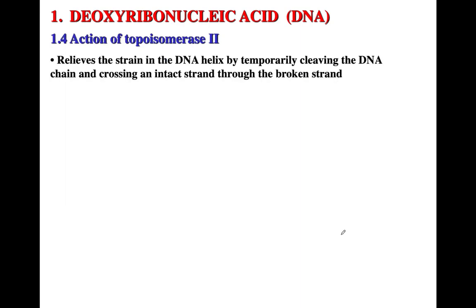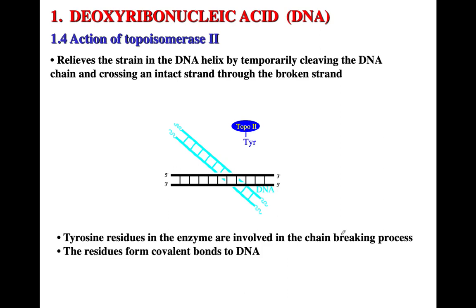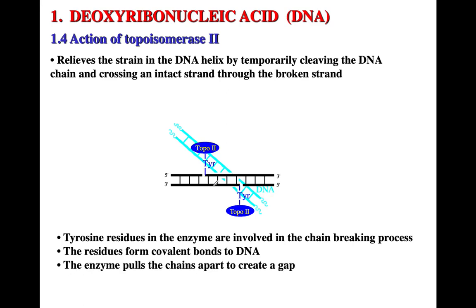Topoisomerase 2 relieves the strain in the DNA helix by cleaving the DNA. Topoisomerase has tyrosine residues, and those tyrosine amino acids are involved in the breaking of the chain — they form covalent bonds to the DNA. Although it looks like two different topoisomerase molecules, it is the same enzyme acting and breaking on both strands. The enzyme pulls the chain apart to create a gap so that one strand of DNA can be passed through.